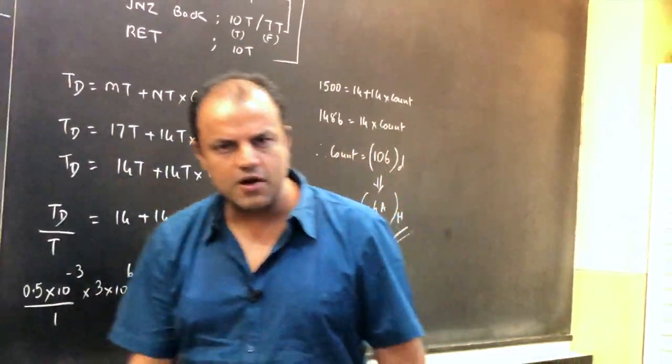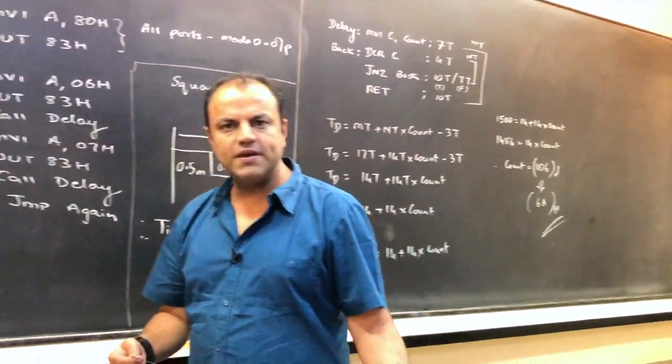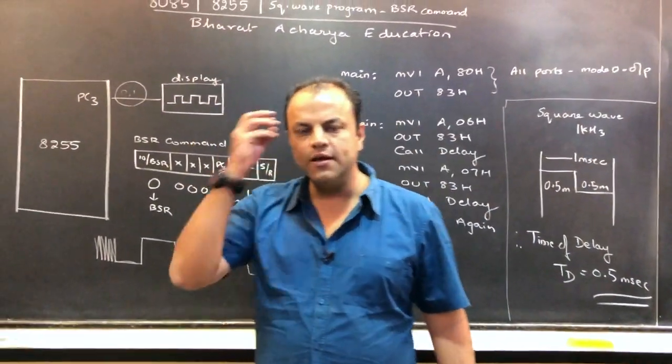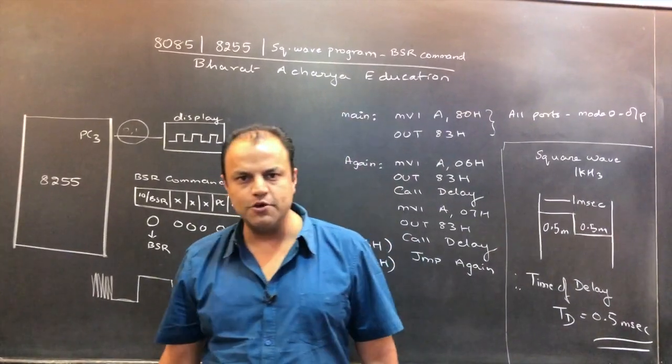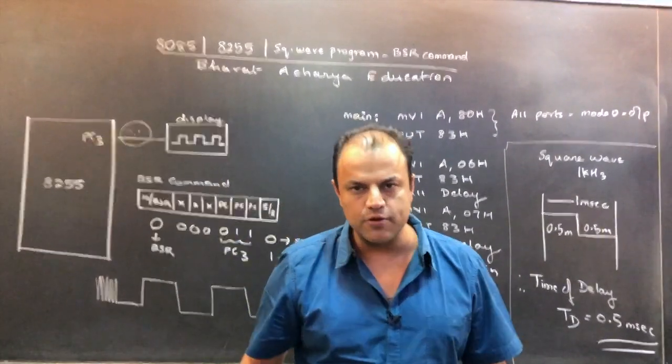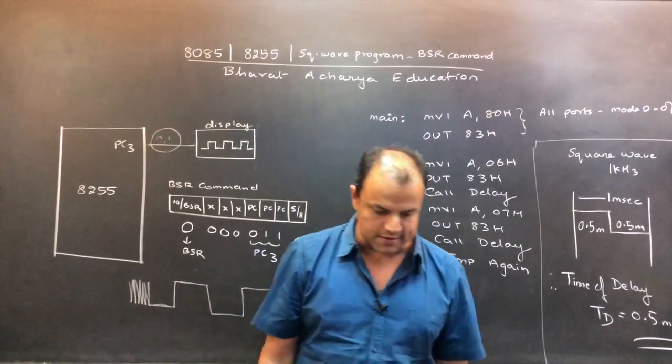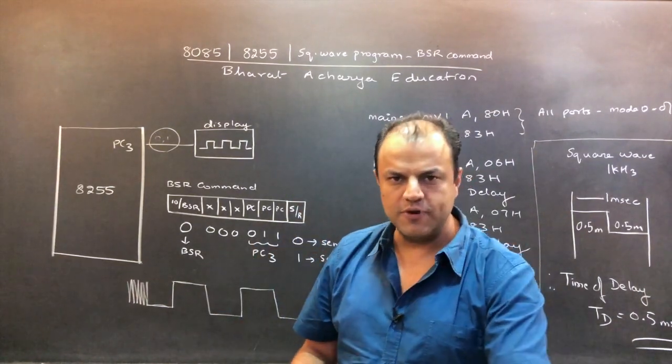Now, once you come to know what is the count for a square wave, if I ask you to make a rectangular wave, you don't even need to do the whole calculation again. With just a simple analysis in your mind, you can understand what will be the count for a rectangular wave or for a spike waveform, etc. So that's what's going to happen in this program.